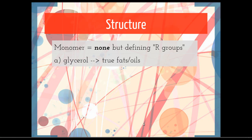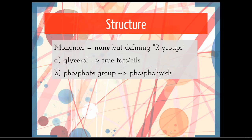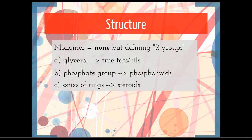The true fats and oils have a glycerol or more attached to their particular backbone. The phospholipids, as you might guess, have a phosphate group attached to them. And steroids are made of a series of rings all put together.